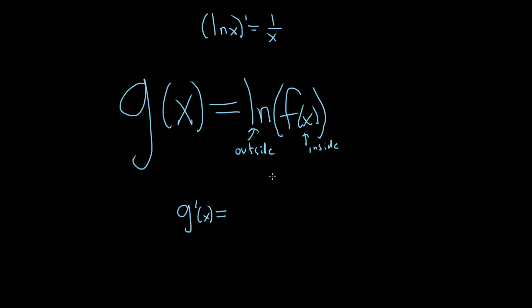And so you take the derivative of the outside, and you leave the inside untouched. So 1 over, and instead of x, it's f of x. Then you multiply, so times the derivative of the inside, which in this case is just f prime of x.